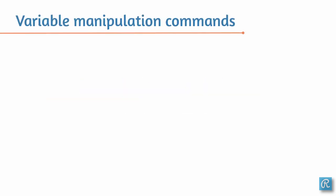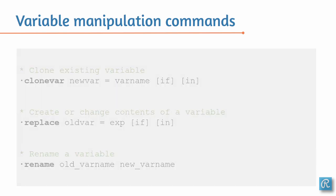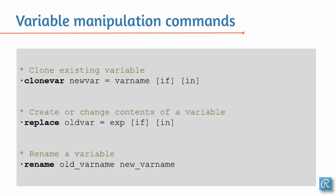Let's take a look at their syntax. Here are the three variable manipulation commands we are going to look at in this video. The first one is to clone existing variables. To clone an existing variable, all you have to do is type the command clonevar, the name you want to give your new variable equals your variable name — so the variable you want to clone — and you can use the qualifiers if and in.